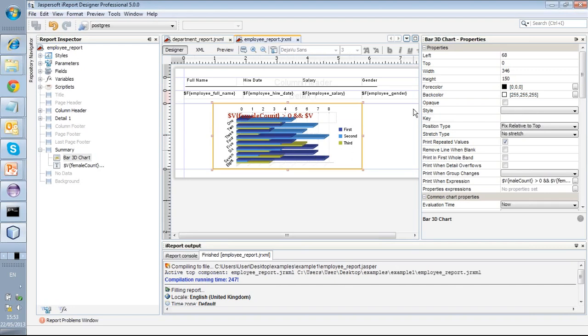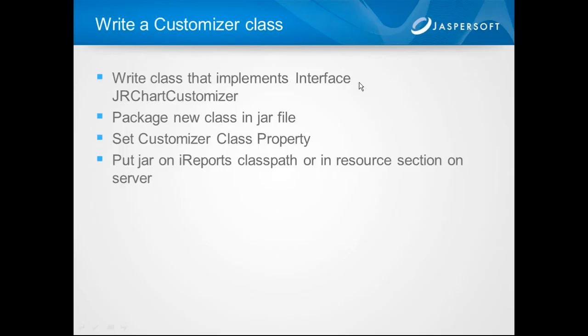Those are how to do customizers and chart themes. Going back to the PowerPoint to reiterate the steps: first, write a class implementing the JRChartCustomizer interface; second, package that new class in a JAR file; third, set the customizer class property in iReports; and fourth, put the JAR on the iReports classpath — or if installing on the server, place the JAR in the resource section of the particular report unit you're dealing with.